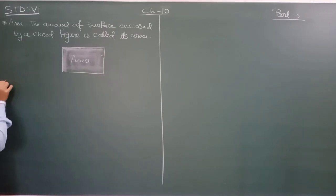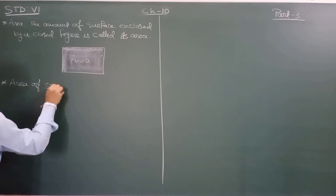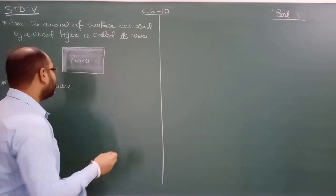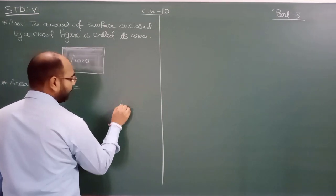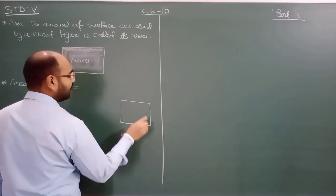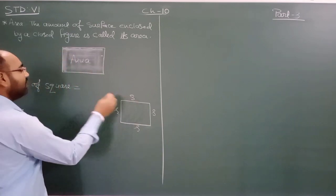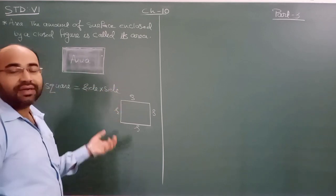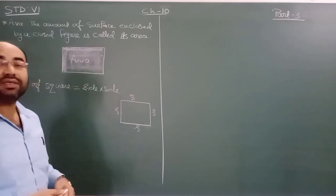Area of square. As you know, in a square all sides are equal. All four sides are equal, and if you want to find the area of that square, we multiply side into side, which can also be written as side squared.